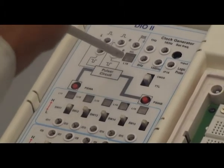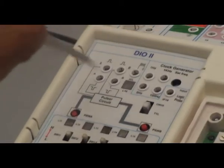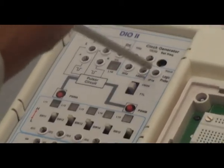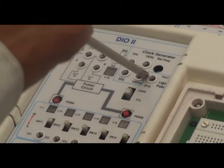You can give the logic probe. You can see the LED's position. And these are 4 clock generators: one is 1 hertz, 5 hertz, 100 hertz, 1 kilohertz.